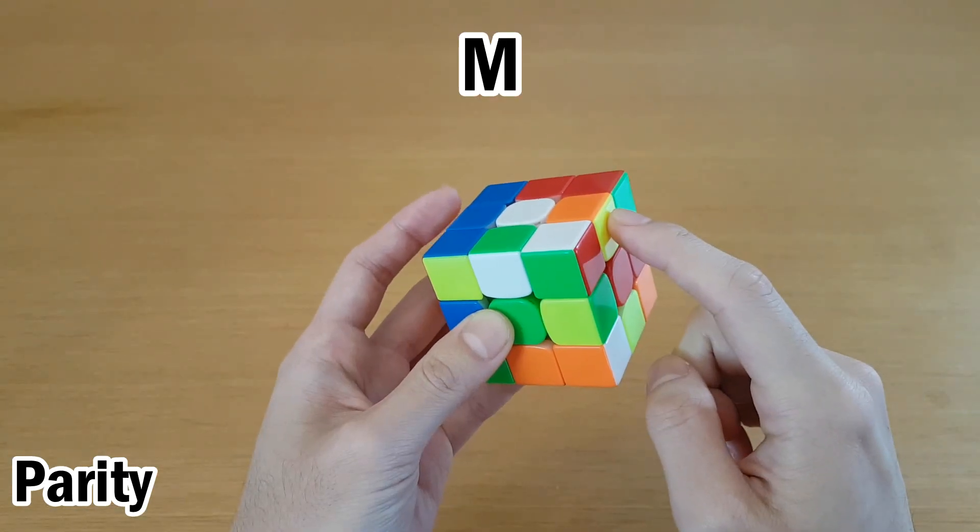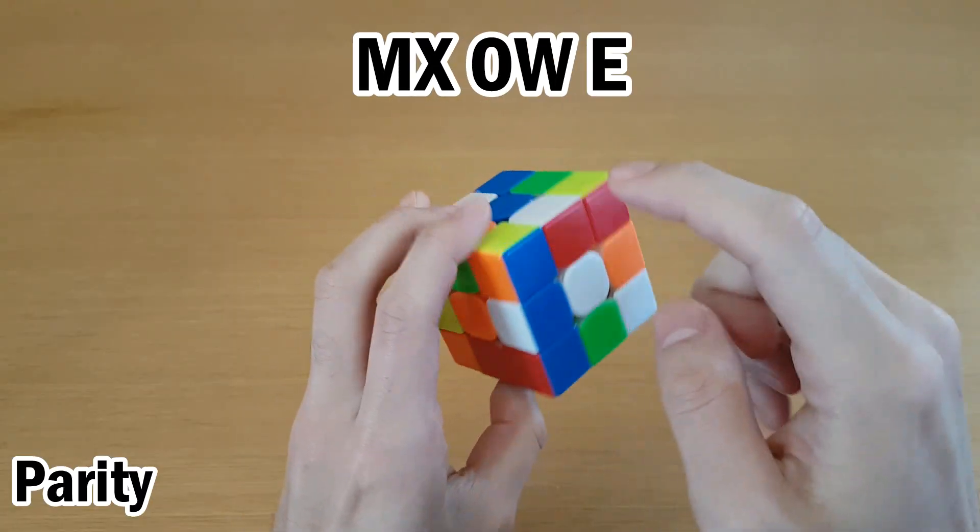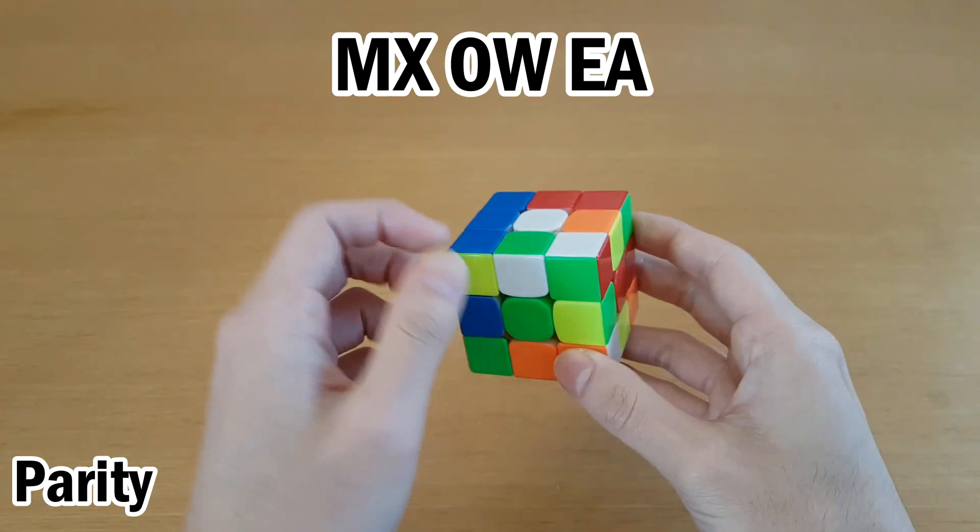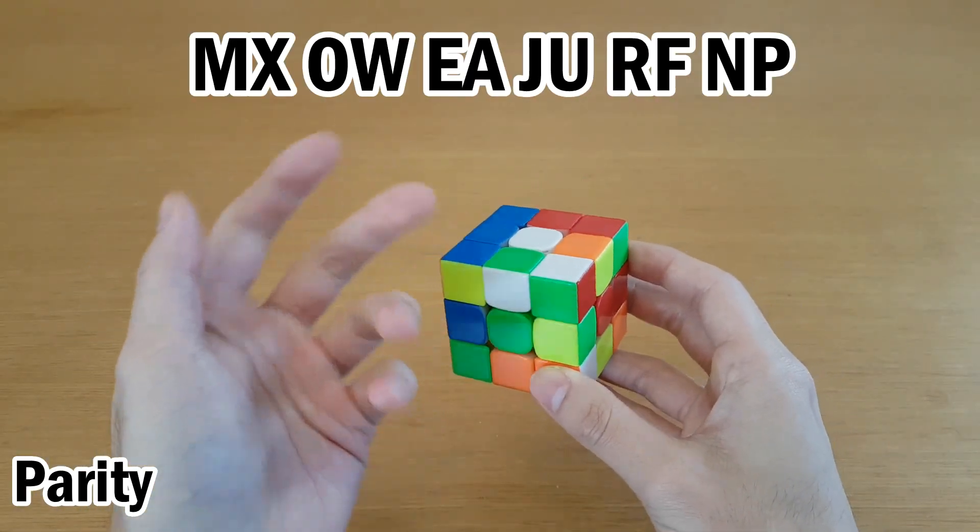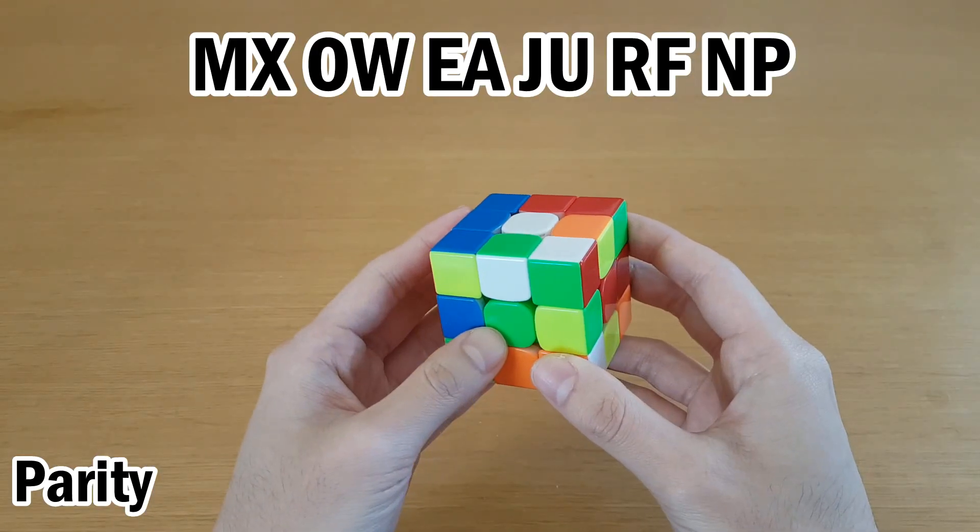If I were to continue through memorization, so this goes to X, then O, W, E, A, and then this is actually the buffer now because these two needed to be swapped. I would continue through memorization as usual and get an even number of letters. So there will always be an even number of edge letters no matter what.